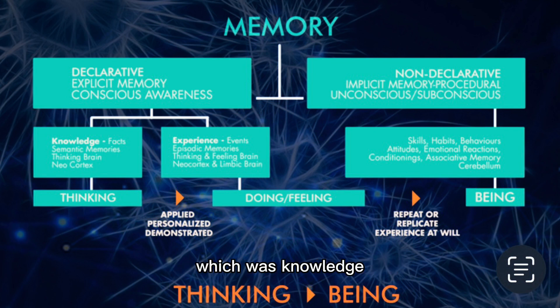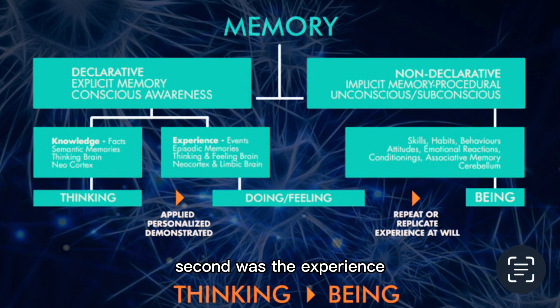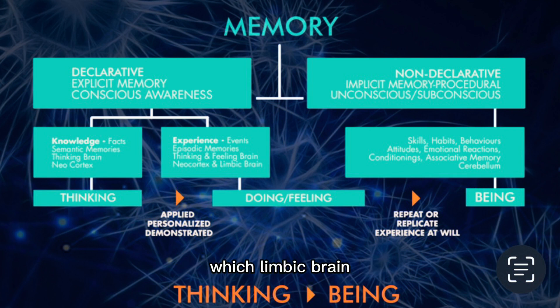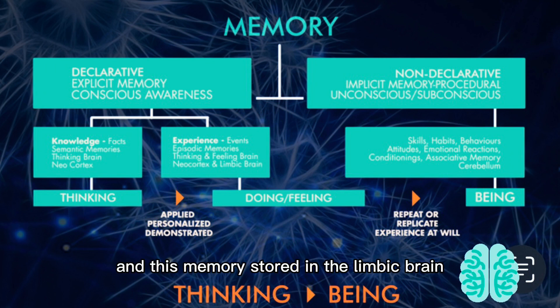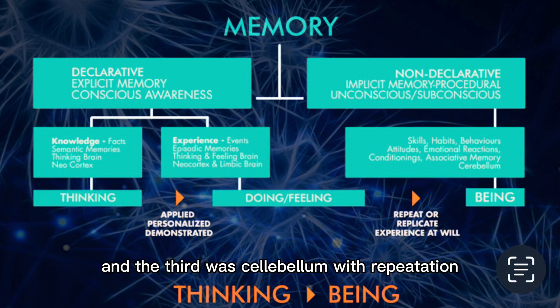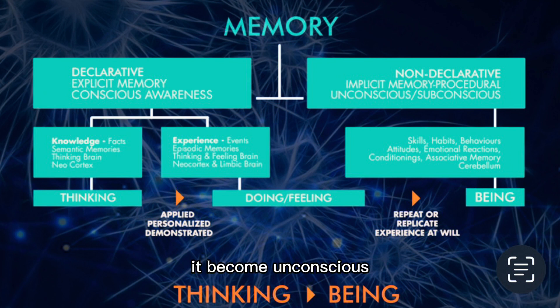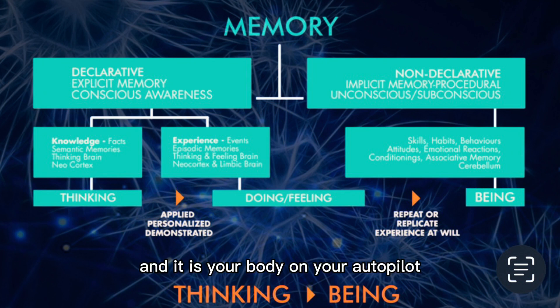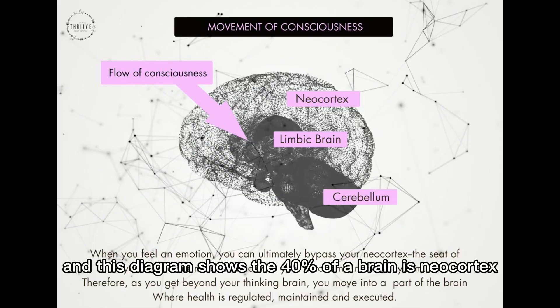This becomes a state of being — from thinking to doing to being. Thinking is in your cortex, which is knowledge and the analytical mind. Second is experience — the emotional component — which is the limbic brain, with memory stored there. Third is the cerebellum, where through repetition it becomes unconscious subconscious memory and your body runs on autopilot.